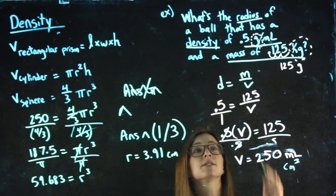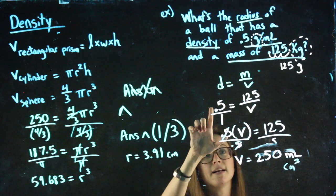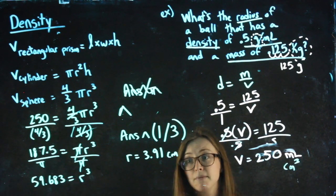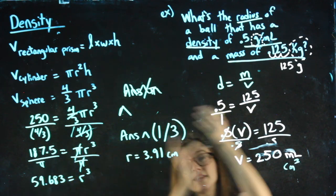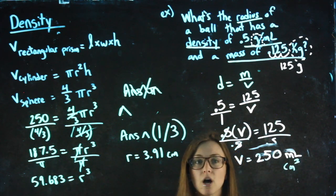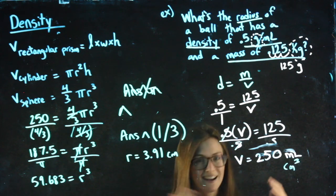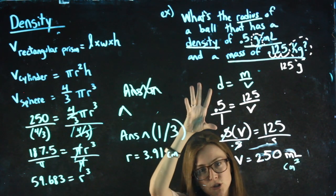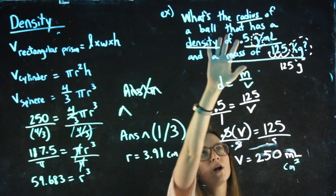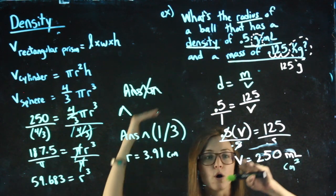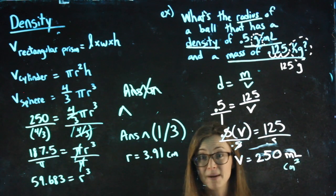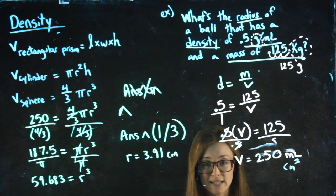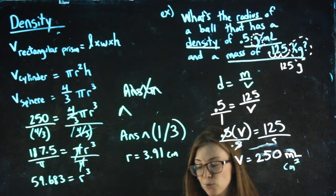So when you go to do these try problems, it might not be exactly the same. I might not give you the density and the mass and ask for the radius. Maybe I give you the radius and you have to find the volume to then go plug in. It's not always going to be a carbon, haha, funny, a carbon copy of the exact problem you saw, but ask yourself, what do I have, where can I plug it in, what can I find? Okay, is that my answer? That'll serve you well all year long. So keep trying, keep asking questions. We're here to help.